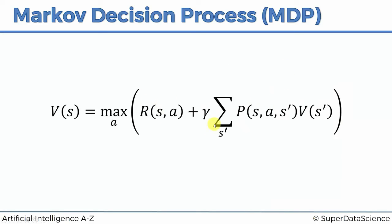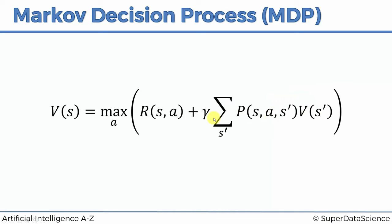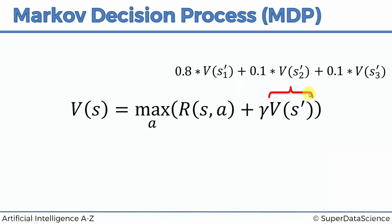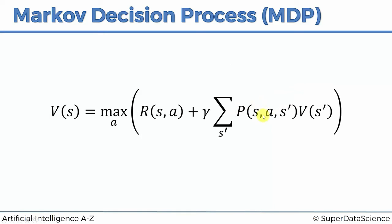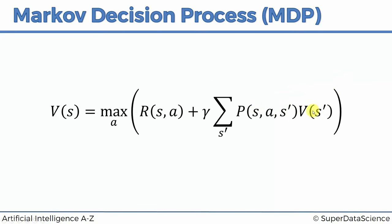If you look at the updated equation carefully, you'll see it's exactly the same thing as before: you've got max, you've got R(S,A), you've got gamma — but then instead of taking V of a single known next state, you're taking the expected value of the state you'll get into. In simpler terms, you're taking a weighted average of what you'll get. Here you've got the probability of being in state S, taking action A, and getting into state S prime, times the value of S prime, summed across all S primes you could possibly get into. So with three possible outcomes, you multiply each by its probability and add them up.